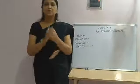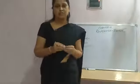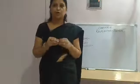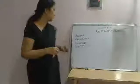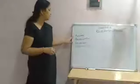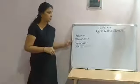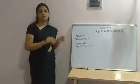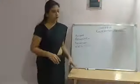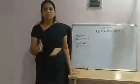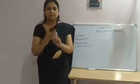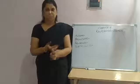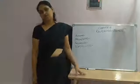Students, you have to learn all four diseases given in your book. The four diseases are Asthma, Bronchitis, Pneumonia, and Tuberculosis. You have to learn the causes, symptoms, and prevention for all four of them. Thank you, students.